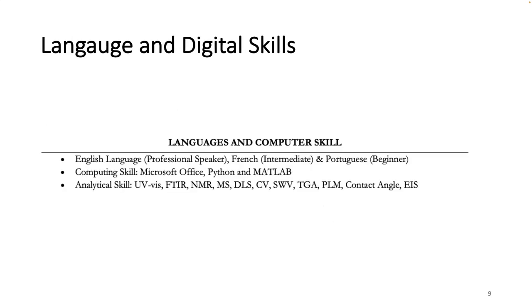We have language and digital skills. This is often seen in Erasmus and also some US applications. If you're making a CV for Erasmus, you have to put your languages — for example, English at professional level, French at intermediate, Portuguese at beginner. Also list computing skills. If you are studying a course like chemistry, which involves a lot of analytical techniques, you can list all those techniques. If you feel like your CV is going to be scanty, you can also put your language and digital skills in your US or Canada application to make it look more complete.